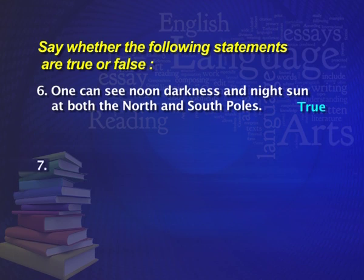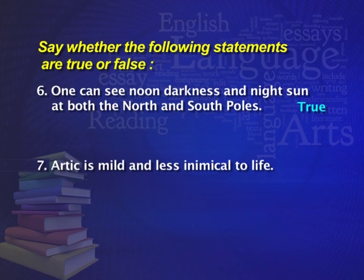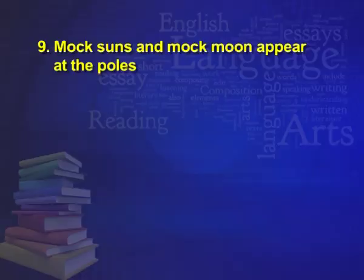Question 6: One can see noon darkness and night sun at both the north and the south poles — yes, this statement is true. Question 7: Arctic is mild and less inimical to life — is it true or false? This is true. Now, learners, we will move on to the next part. You will need to select the correct ones from the given options.